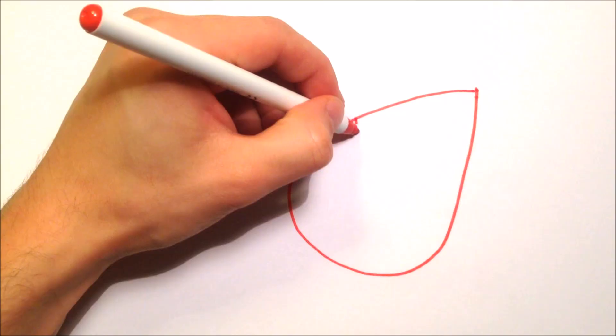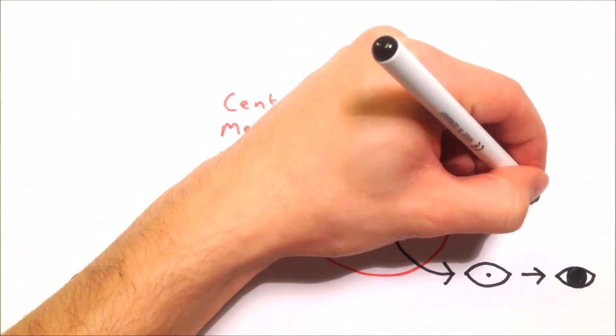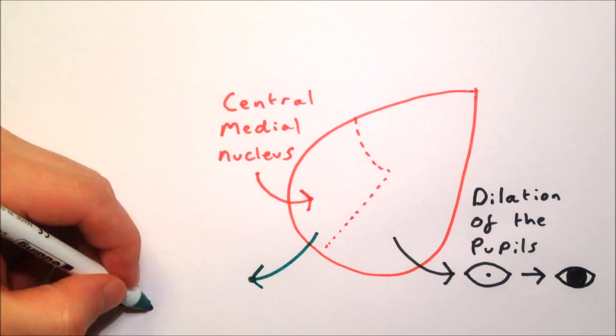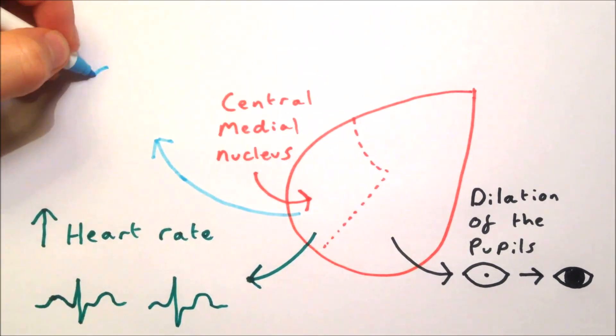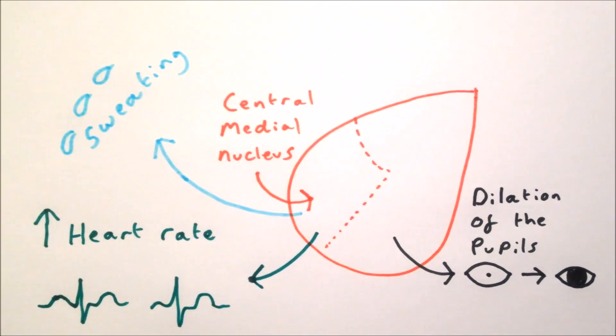By coordinating these downstream targets, the amygdala is able to produce many of the physiological changes associated with feelings of fear, including increased heart rate, sweating and dilation of the pupils.